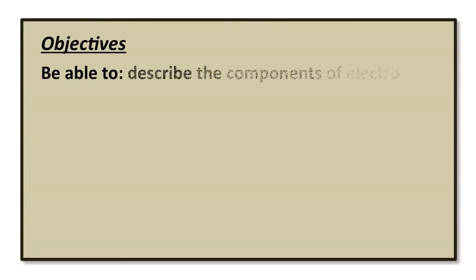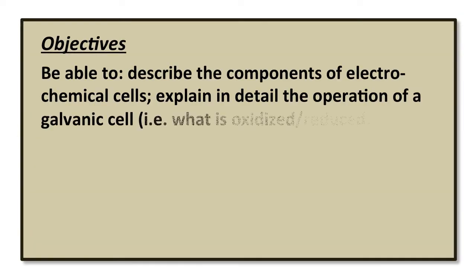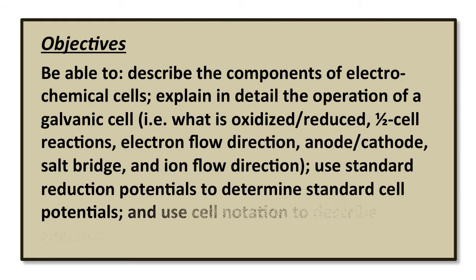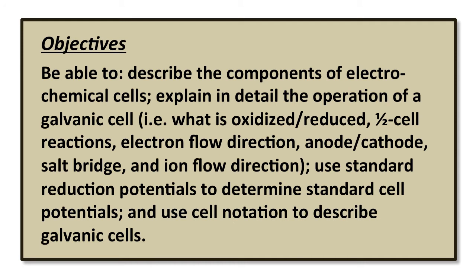The objectives of this screencast are for you to be able to describe the components of electrochemical cells, to explain in detail the operation of a galvanic cell — what is oxidized, what's reduced, what are the half-cell reactions, what's the direction of electron flow, what are the anode and cathode, what's the salt bridge, and what is the ion flow direction. Also, to use standard reduction potentials to determine standard cell potentials, and to use cell notation to describe galvanic cells.